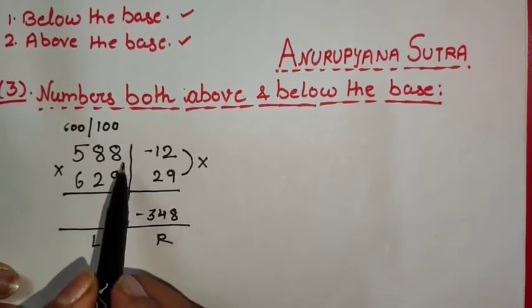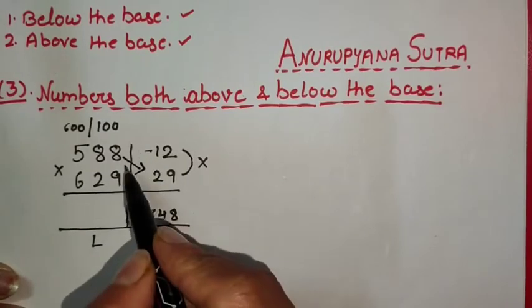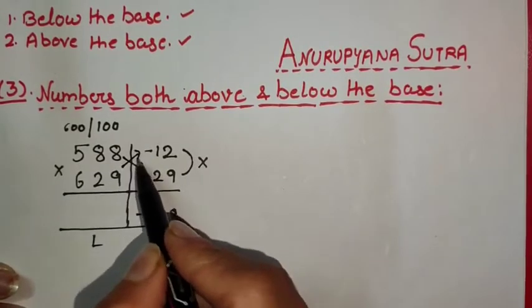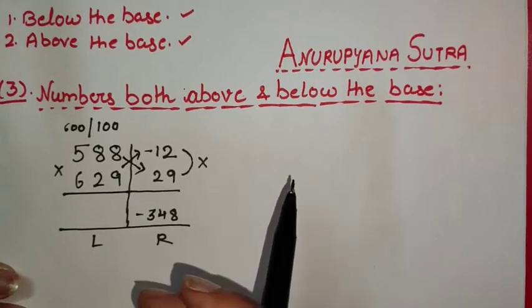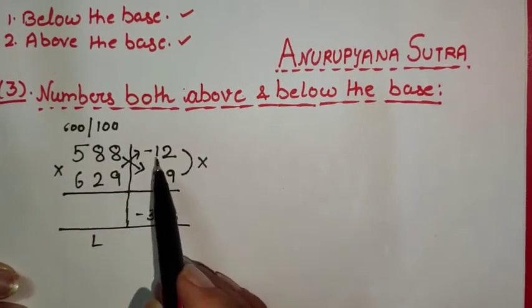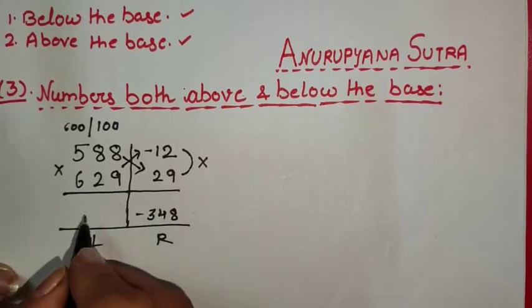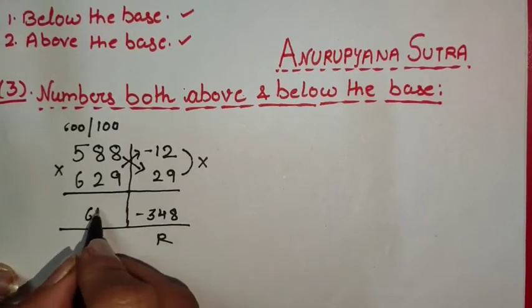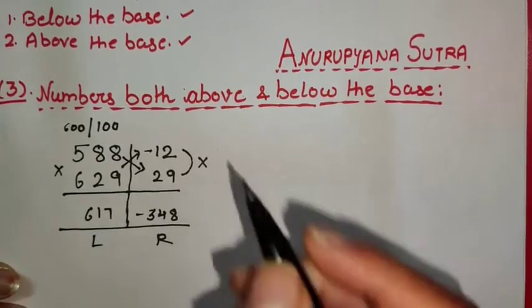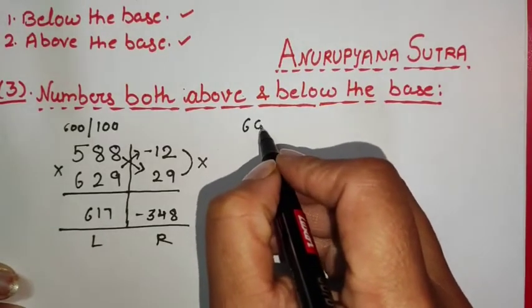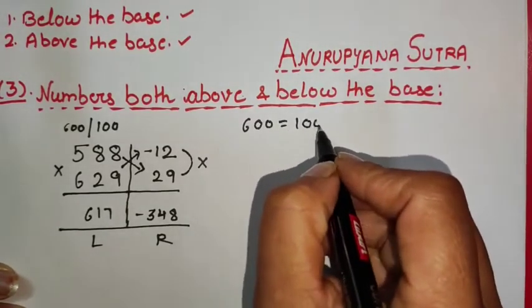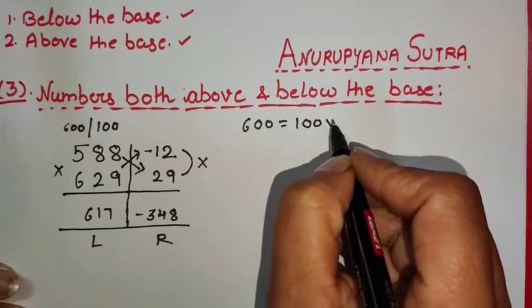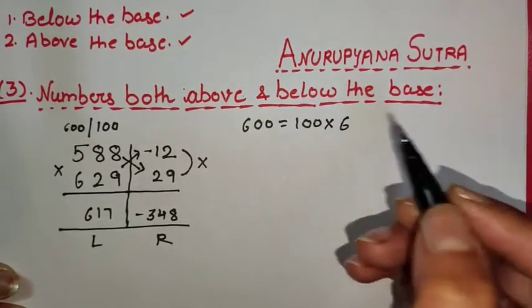To find the left-hand side of the answer, we cross-add or cross-subtract — whichever is easier. The answer of 629 minus 12 comes out to be 617.